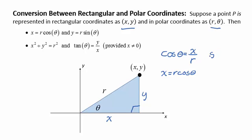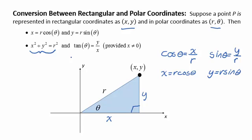Similarly, we know the sine of theta would be the opposite side y over the hypotenuse, so that y is equal to r sine theta. We also know that since this is a right triangle, the Pythagorean theorem applies, and x squared plus y squared would be r squared. And to find the angle, knowing the x and y dimensions, or the sides of the triangle, we could use the tangent function.